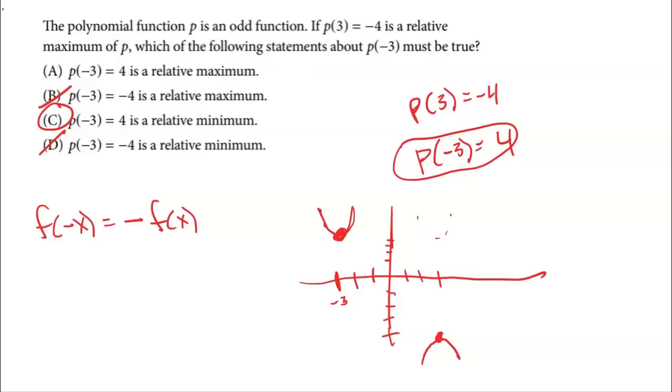So the answer here is C. Once again, because I knew that p(-3) = 4 for sure. And if I take that original point which was a max and reflect it across the X and Y axis, that would turn into a relative minimum.